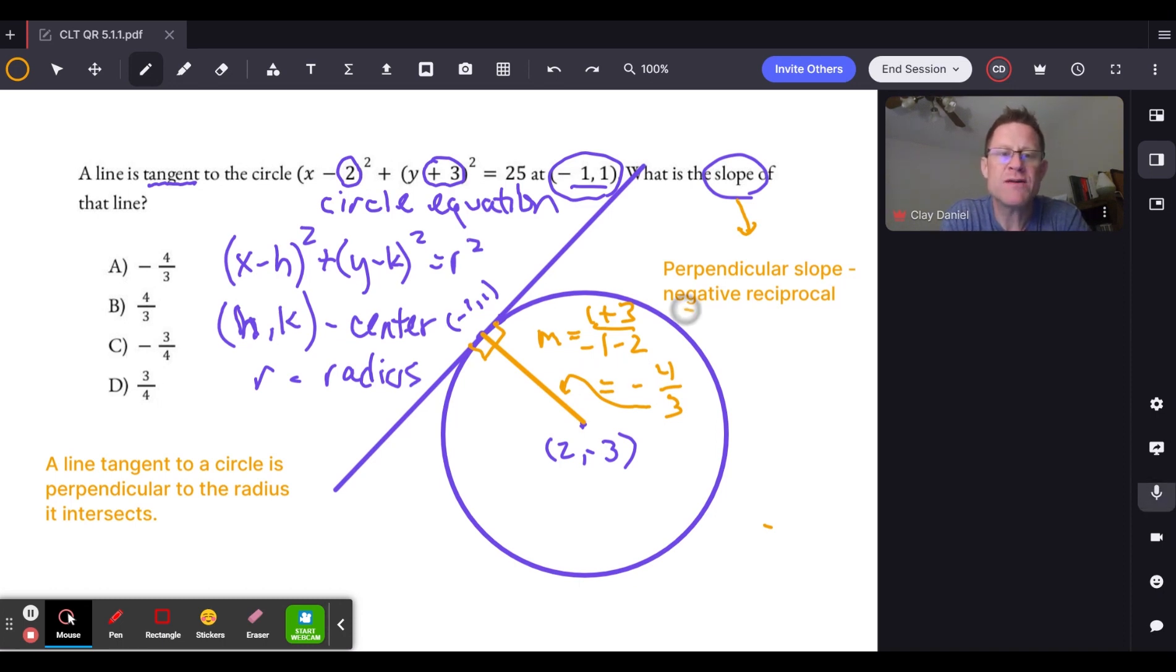Now we're almost there. As we take the negative reciprocal of 4/3, we will—negating it will turn it positive, flipping it as the reciprocal will flip it over, and we will get to our answer of negative 3/4.